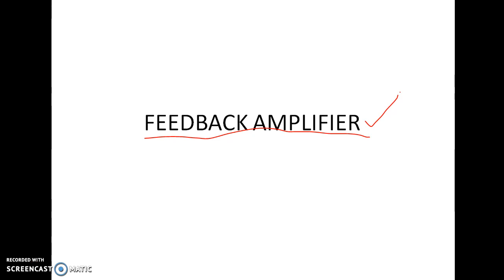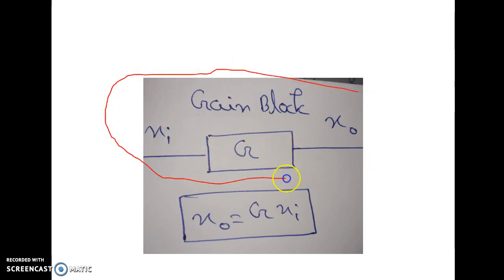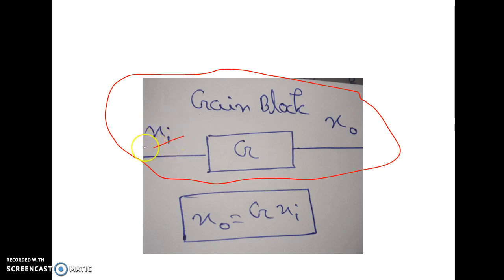So let us start the discussion on feedback amplifiers. See this figure — you have all studied in your BJT and MOSFET amplifier topics. Here one input XI is there; it may be current or it may be voltage. For generalized purpose, I have denoted it by XI. And this is the gain block, whose gain value is G — it may be 10, 20, 30, whatever, dependent on the amplifier.